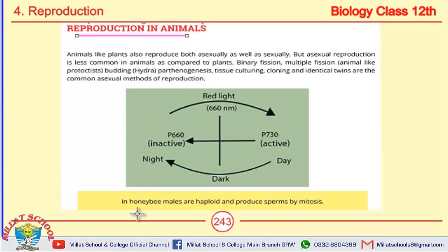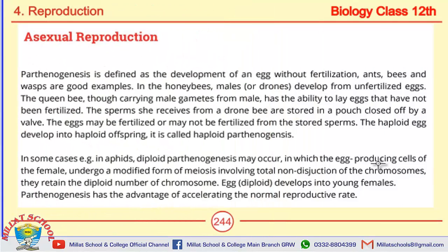Now we will study asexual reproduction in animals. First of all, there is parthenogenesis. Parthenogenesis means that without fertilization, a new individual develops. No zygote is formed — in parthenogenesis, without fertilization, a new individual develops directly.